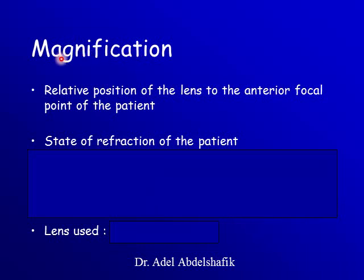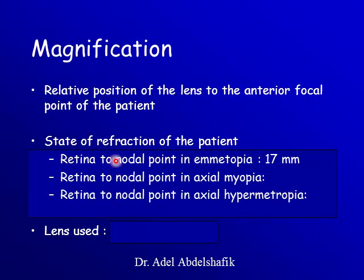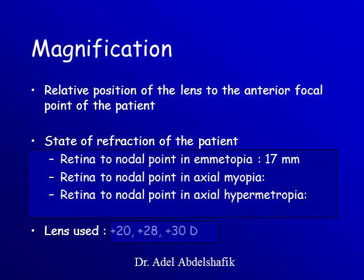So magnification or the size of the image depends on the relative position of the lens in relation to the anterior focal point of the patient, and also on the patient's state of refraction. In the normal eye the distance between the retina and the nodal point is 17 millimeters. In axial hypermetropia it is larger, and in axial myopia it is longer — this affects magnification. Finally, the lens used also affects magnification, as the focal length varies with lens power.